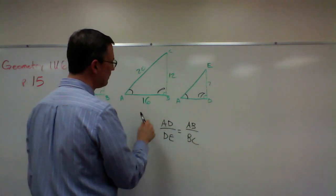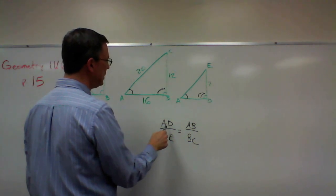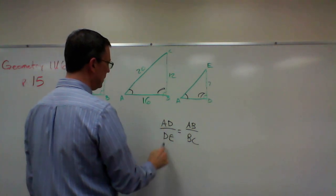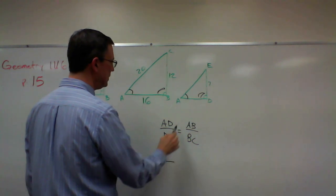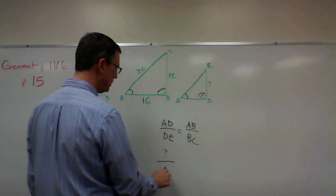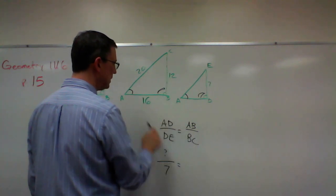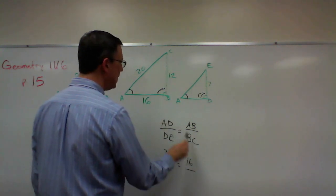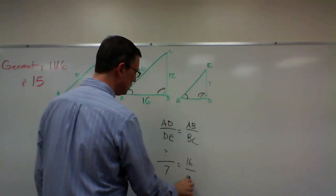Now we can plug in the numbers. AD we don't know, so I'll do a question mark. DE we know that is 7. AB, that's given, that's 16, and then BC is 12.